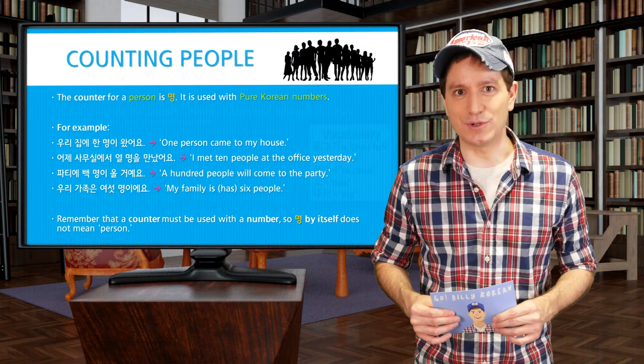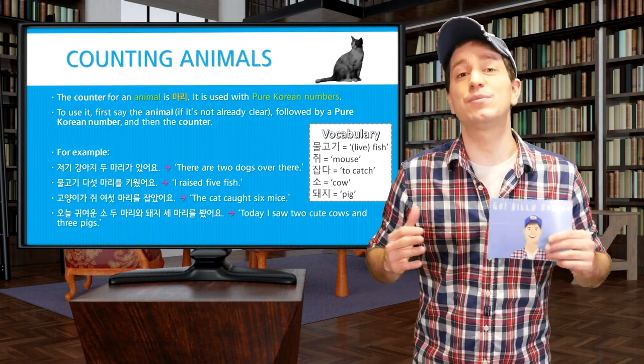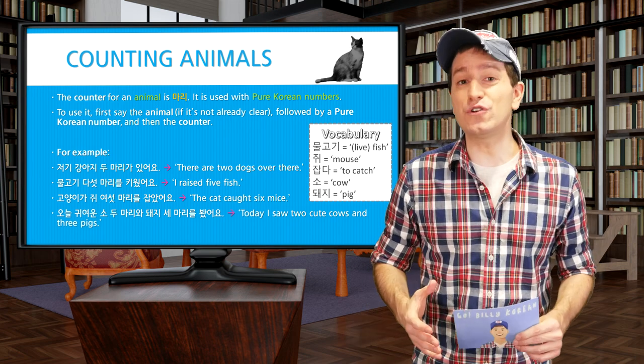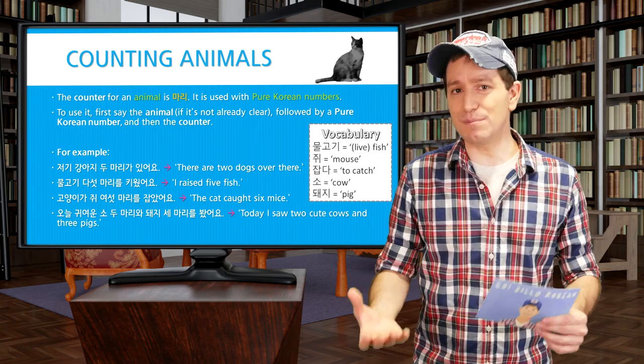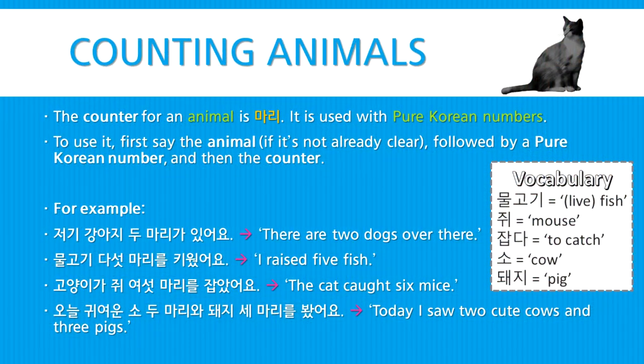Next, let's learn how to count animals. We're going to need the counter 마리, used together with pure Korean numbers. You'll first say the animal, if it's not already clear, followed by the number, and then the counter 마리. For example: 저기 강아지 두 마리가 있어요 — There are two dogs over there. 물고기 다섯 마리를 키웠어요 — I raised five fish. 고양이가 쥐 여섯 마리를 잡았어요 — The cat caught six mice. 오늘 귀여운 소 두 마리와 돼지 세 마리를 봤어요 — Today I saw two cute cows and three pigs.